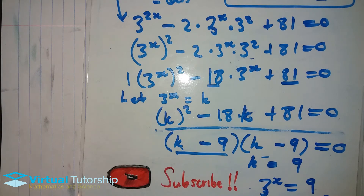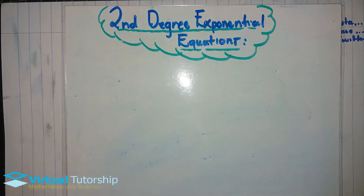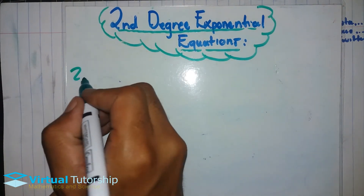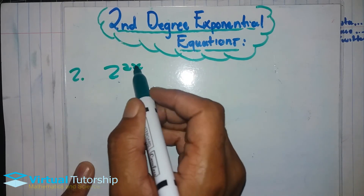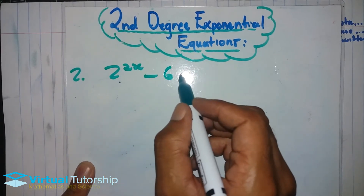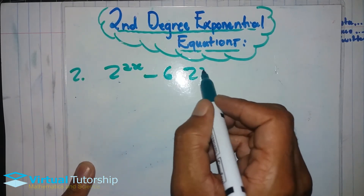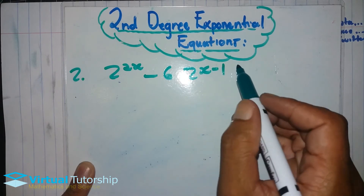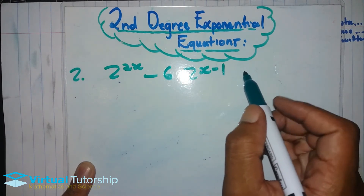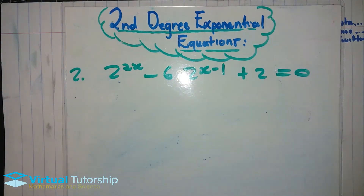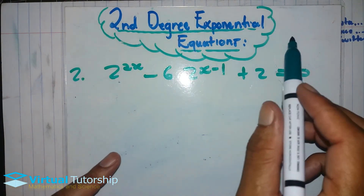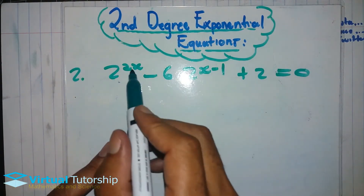As such, another example. Okay, now let's look at example two, which is: 2 exponent 2x minus 6 times 2 exponent (x minus 1) plus 2 is equal to zero. It's a second-degree exponential equation.